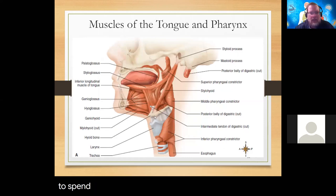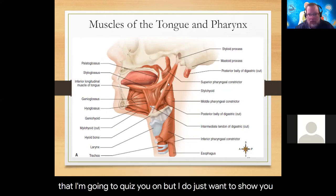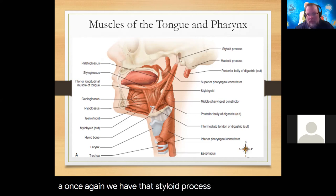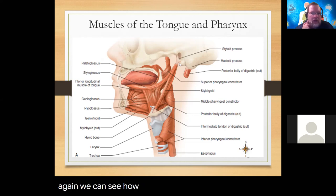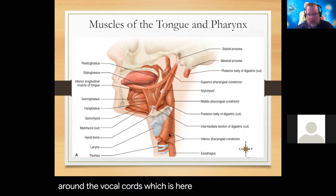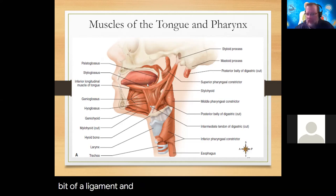I'm not going to spend much time here - there aren't any muscles I'll quiz you on. But I do want to show you the styloid process coming off of the temporal bone, the hyoid bone, and how that area around the vocal cords, the larynx - the voice box - and just superior to it, we see a little bit of ligament and muscle for moving the tongue, chewing, and swallowing.